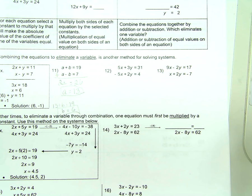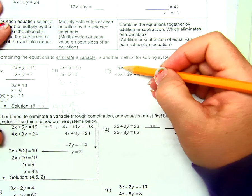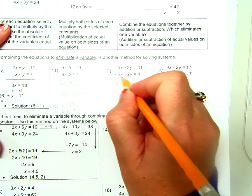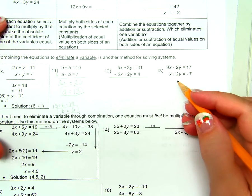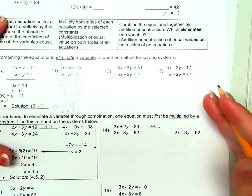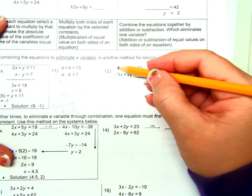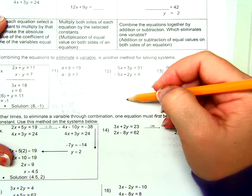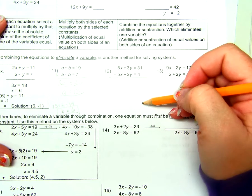So look at number 12. My first question to you is which variable should we try to eliminate? Why should we try to eliminate the X? What does it take to eliminate a variable? An opposite integer, right? An opposite, the same number value but opposite. So, 5X and negative 5X, it's already that way. So I just combine them. Now, some people get so caught up in am I adding them or subtracting them? Well, guys, I'm just combining them. I'm saying what is 5X and negative 5X? Zero.